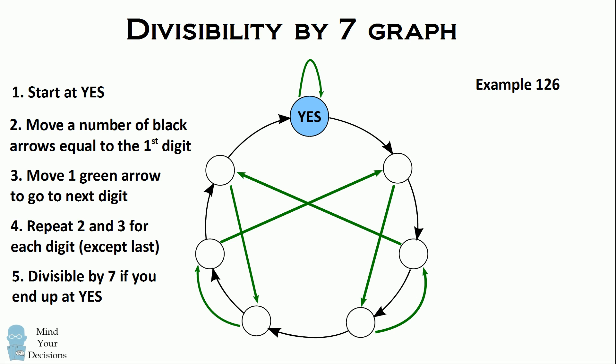Let's try an example. Is the number 126 divisible by seven? We'll start by placing our finger on the circle labeled YES. The first digit of the number is one, so we move one black arrow to get to the next circle.